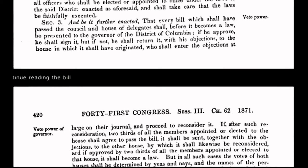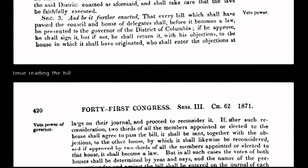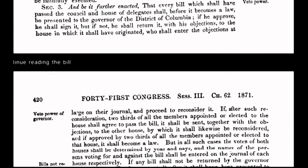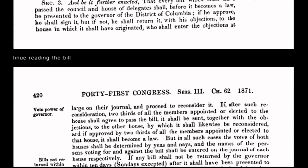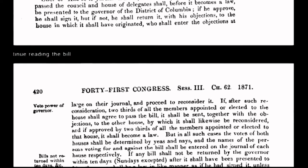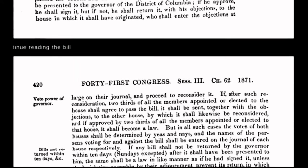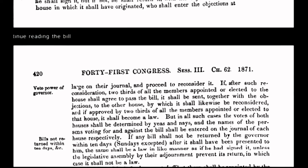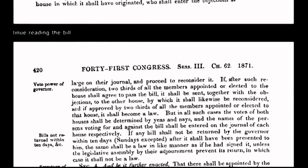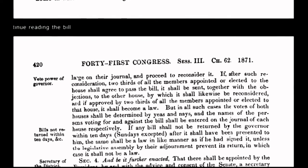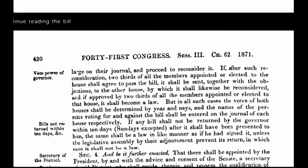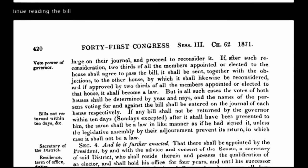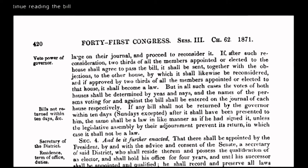Instead of having absolute and unalienable rights guaranteed under the organic constitution, we the people now have relative rights or privileges. One example is the sovereign's right to travel, which has now been transformed under corporate government policy into a privilege that requires citizens to be licensed — passports, for example. By passing the Act of 1871, Congress committed treason against the people who were sovereign under the grants and decrees of the Declaration of Independence and the organic constitution.